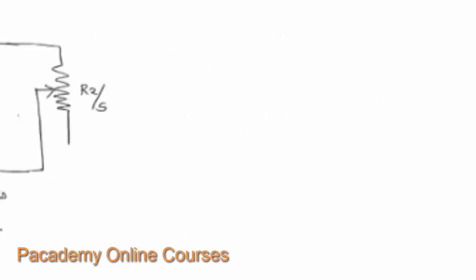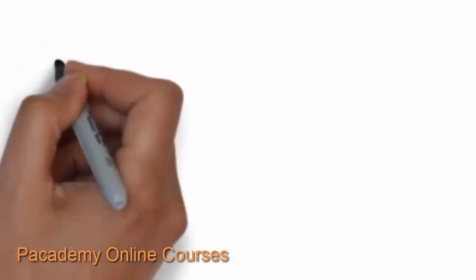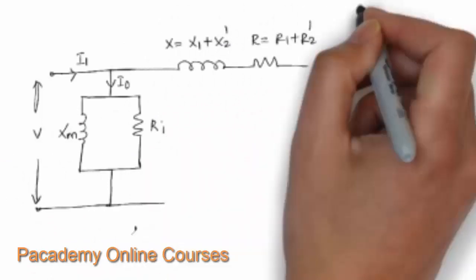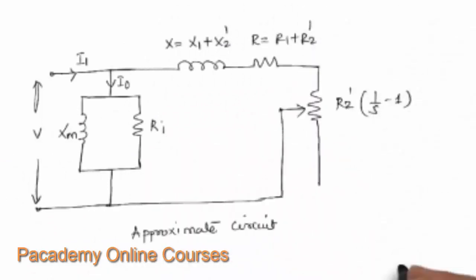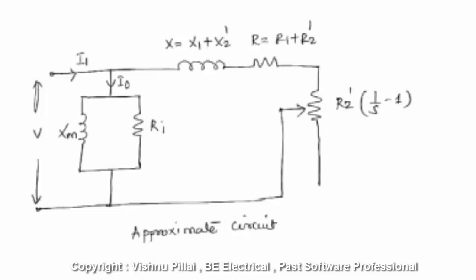It is also possible to draw an approximate equivalent circuit where the stator and rotor reactances are combined — the rotor reactance referred to the stator side. This is done by multiplying the rotor reactance by the square of the transformation ratio, transforming it to the primary side, as in the case of a transformer. The same principle applies to the induction machine.